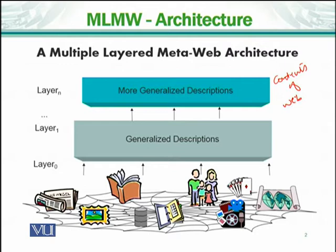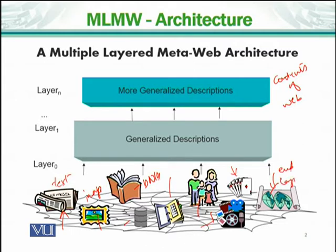The information of daily life includes textual documents, images, books, databases, games, family life, maps, and entertainment things. All this information is Layer 0, which is the end layer — the layer we directly interact with.